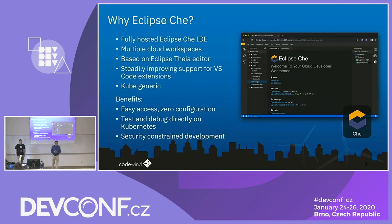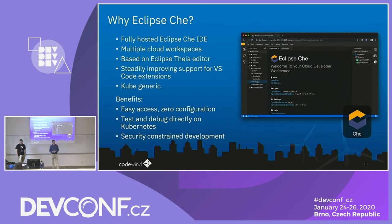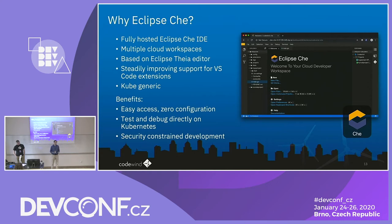Why do we choose Eclipse Che? Codewind itself has an Eclipse plugin available in the Eclipse Marketplace for a fully local environment where you can run Docker containers. We also support VS Code, and we're working on IntelliJ as well — those two are local scenarios. Eclipse Che is where we see ourselves when running fully hosted. If you don't want to set up anything on your local system and want to run everything from Kube while still doing containerized development, that's where Codewind plugs into Che.